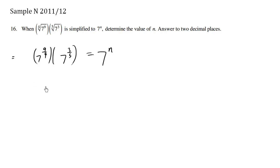So what we have here is we have 7 to the 9 fourths plus 3 fifths equals 7 to the n.